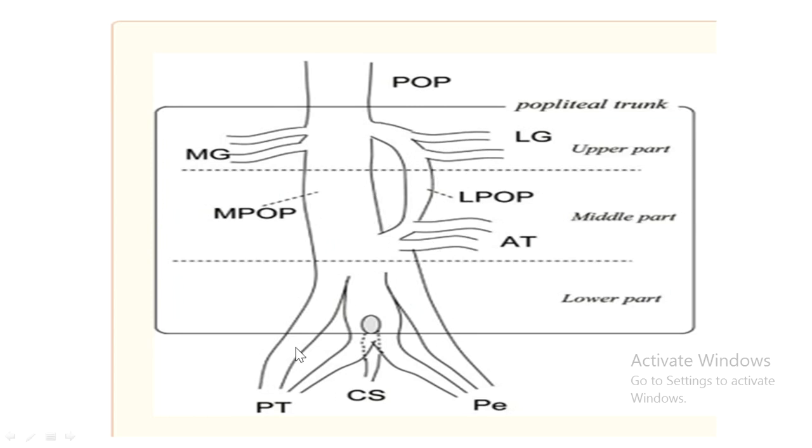In the lower third, this is where the formation begins. You have the posterior tibial vein and the central sinusoidal vein from the soleus muscle, and then you have the peroneal vein.